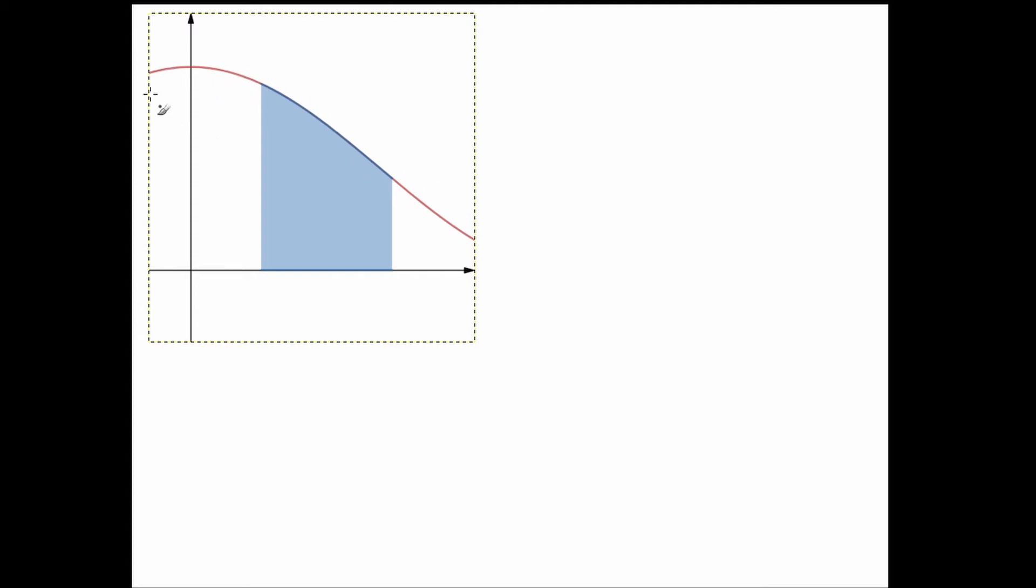Suppose we have a function that creates this line. Let's call it f of t. It's just a random function with a random variable called t that creates this line, that creates this graph.